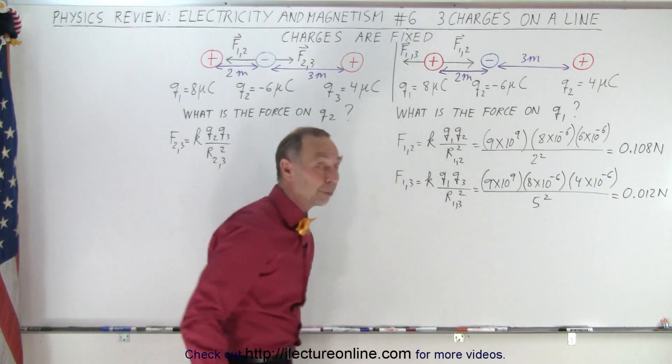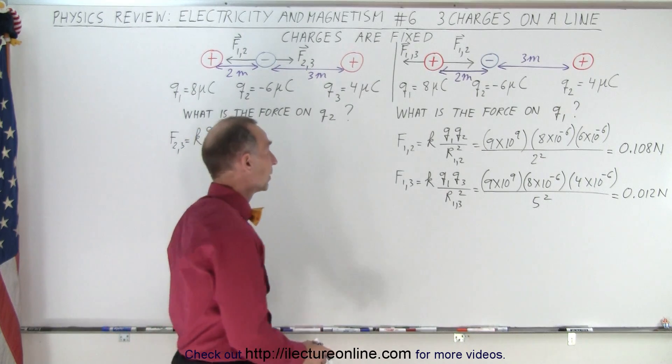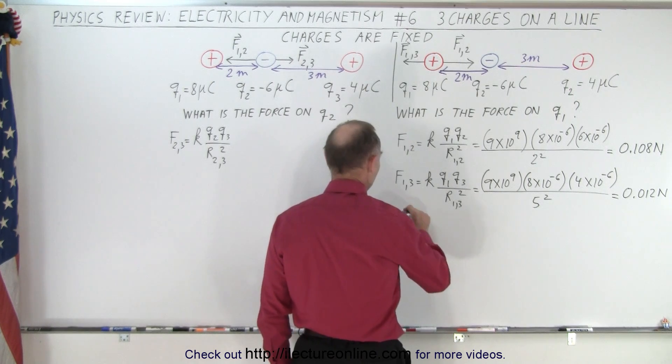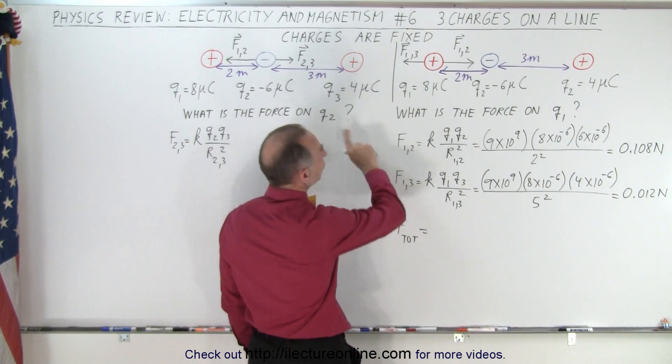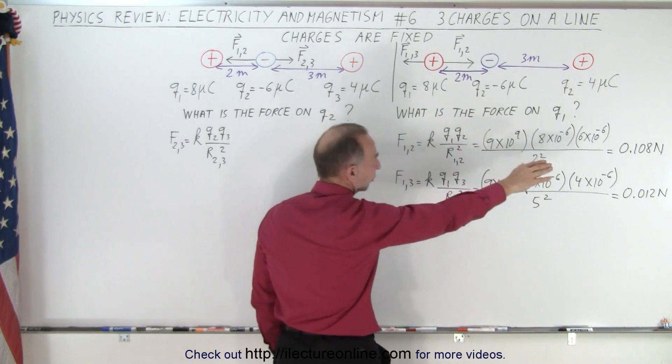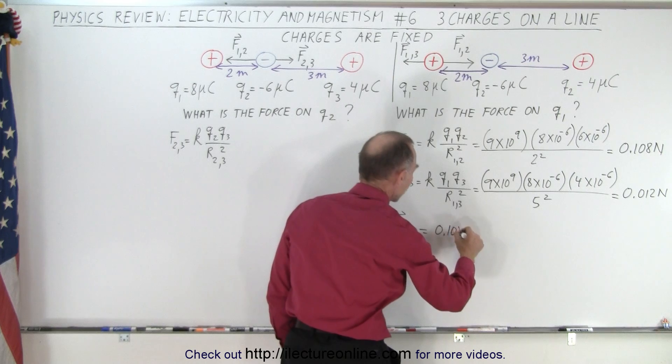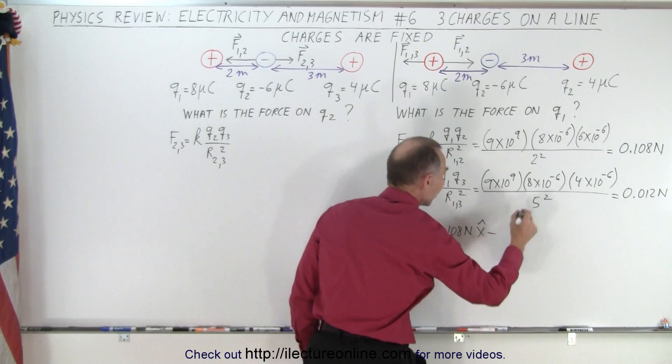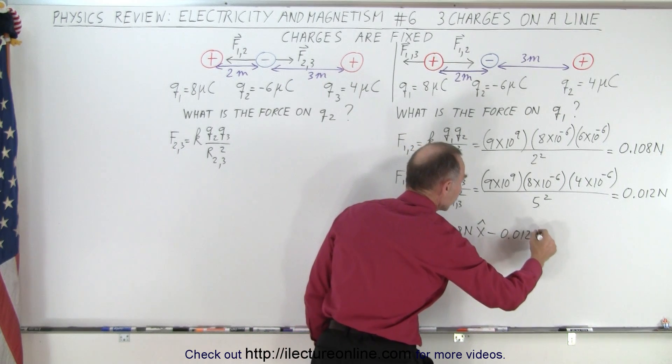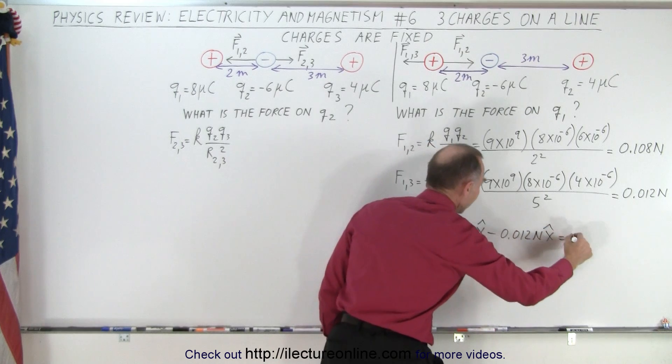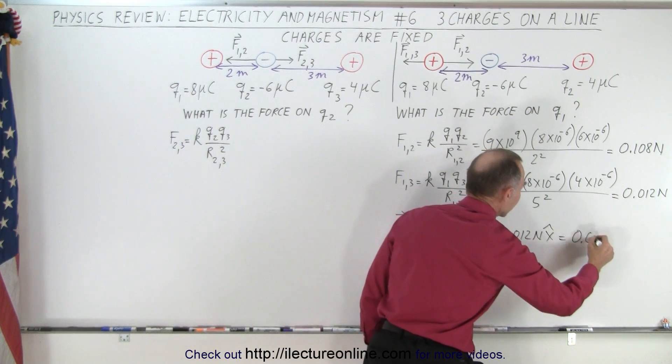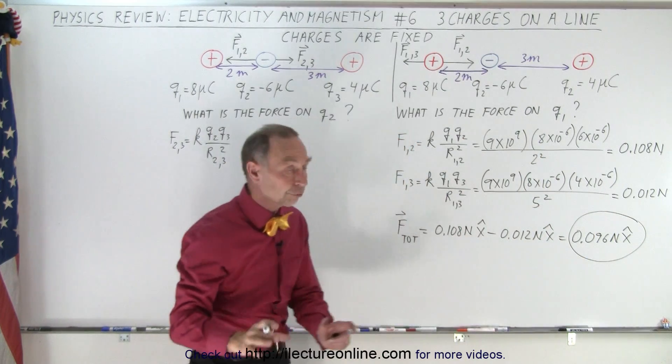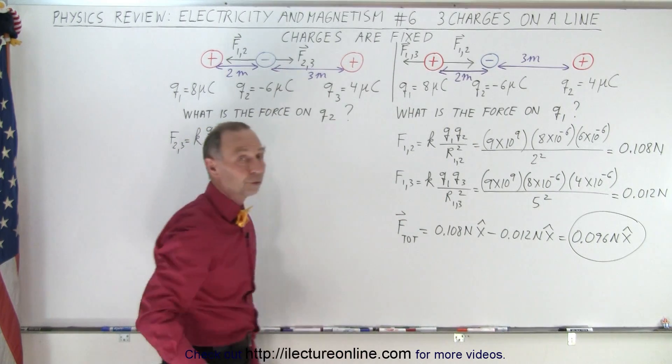So now we have those two. Now we're ready to do the vector sum. So what we can say here is that the net force, or the total force, is equal to F12 is to the right, so that's the positive force in the positive direction, so we have 0.108 Newtons in the positive X direction. The next one is to the left, so that's a negative 0.012 Newtons in the X direction. And so the net result is that we have 0.096 Newtons in the X direction, and so that is the net force, or total force, on Q1 due to the presence of the other two charges.